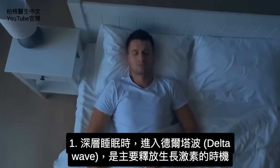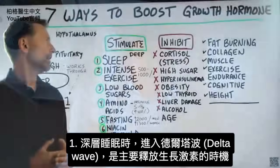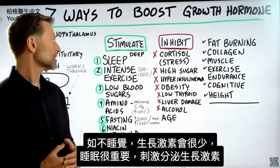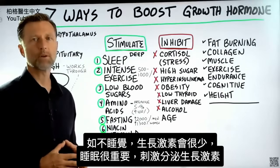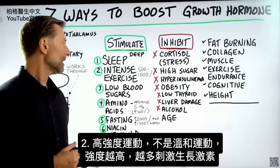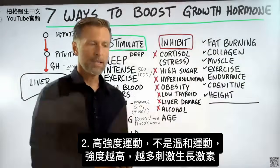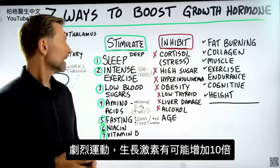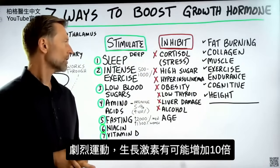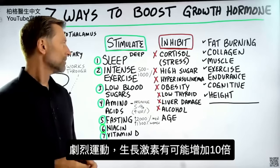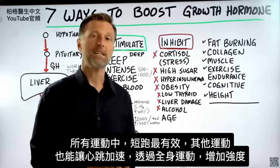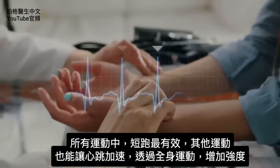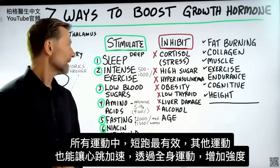In the deep part of your sleep, when you hit the delta wave, that's when you have a major release of growth hormone. If you're not sleeping, you're not going to have nearly as much growth hormone. Sleep is a very potent way to keep growth hormone doing its job. Number two: intense exercise — not mild exercise, but intense exercise. The more intense, the more growth hormone stimulation. You have the potential to increase your growth hormone by up to 1,000% if you do intense exercise. Sprinting is at the top of the list.